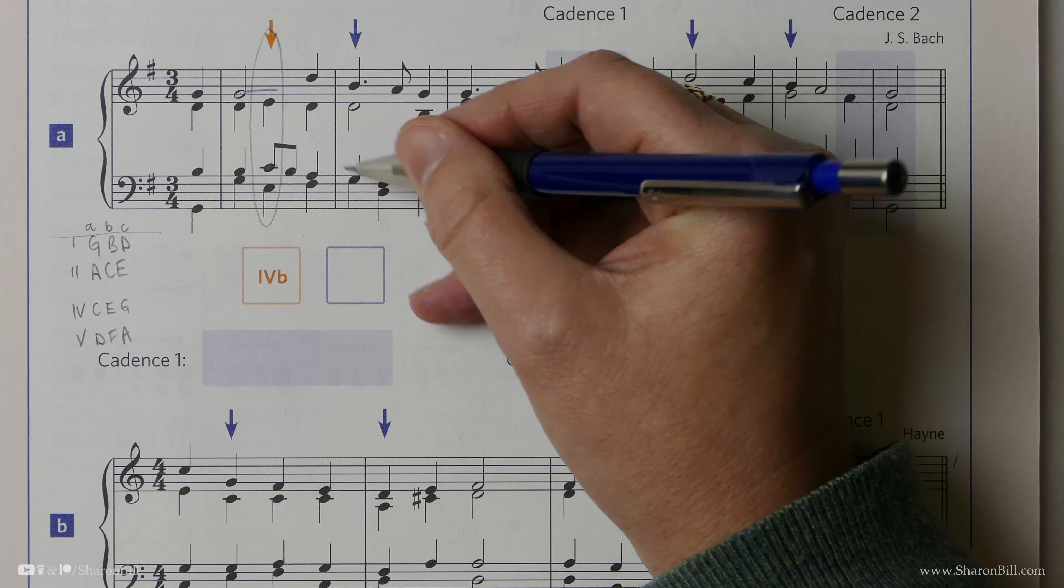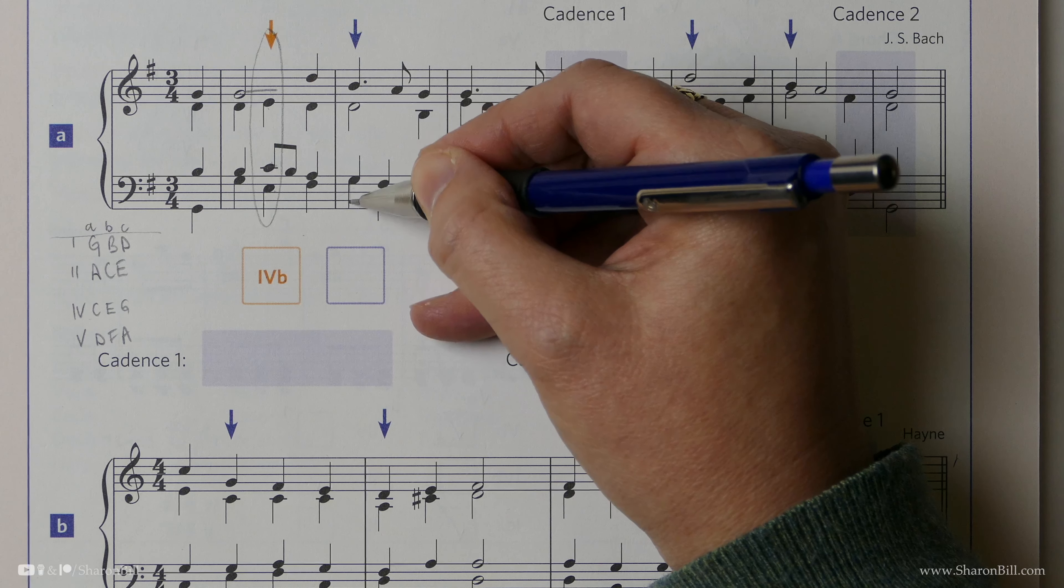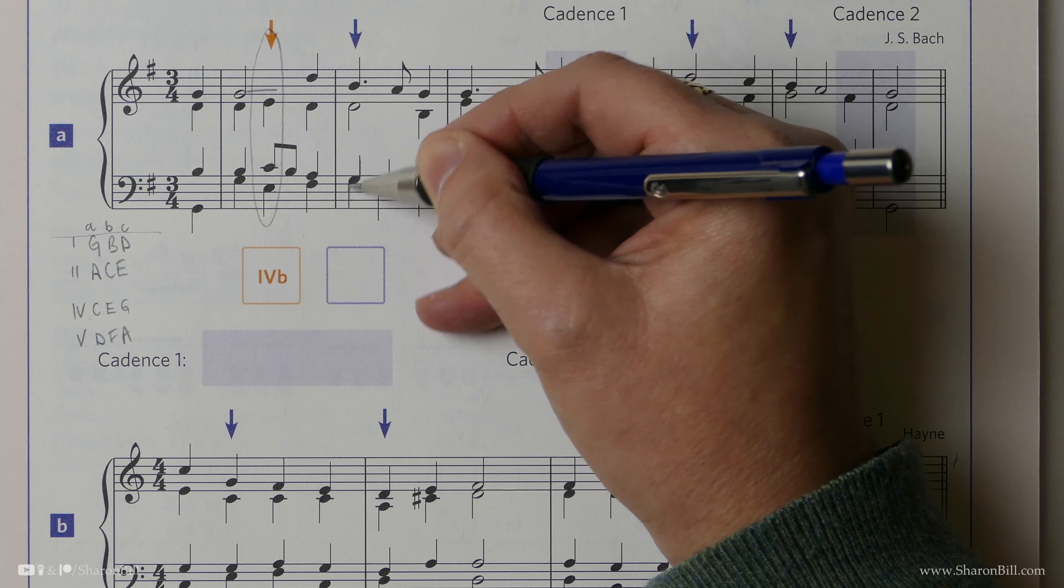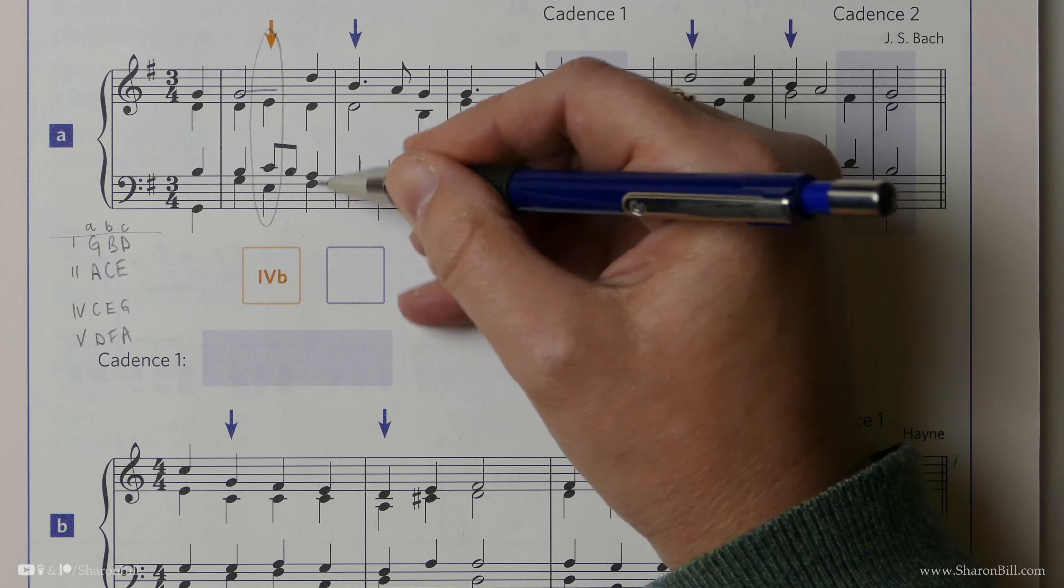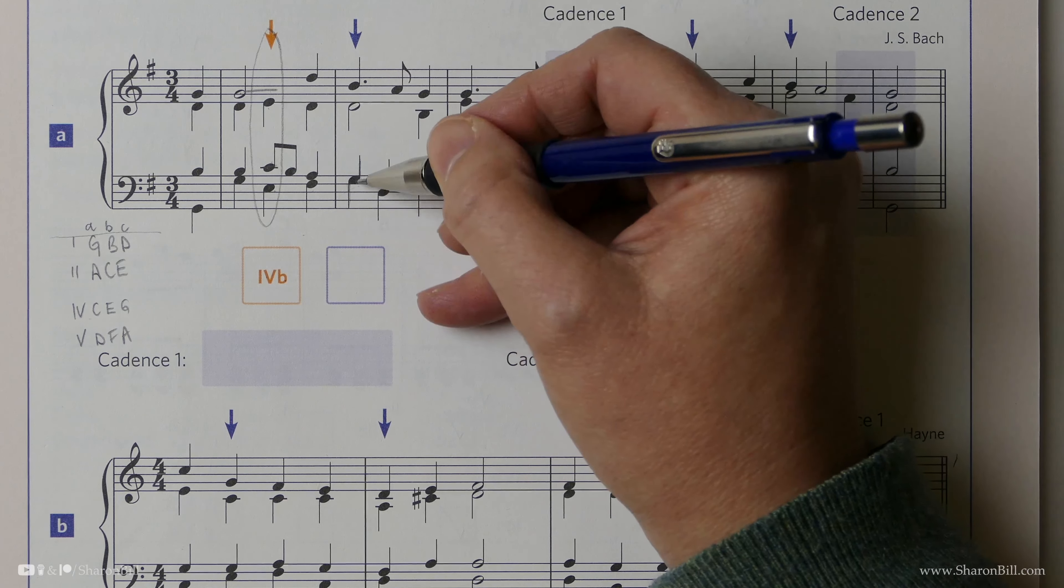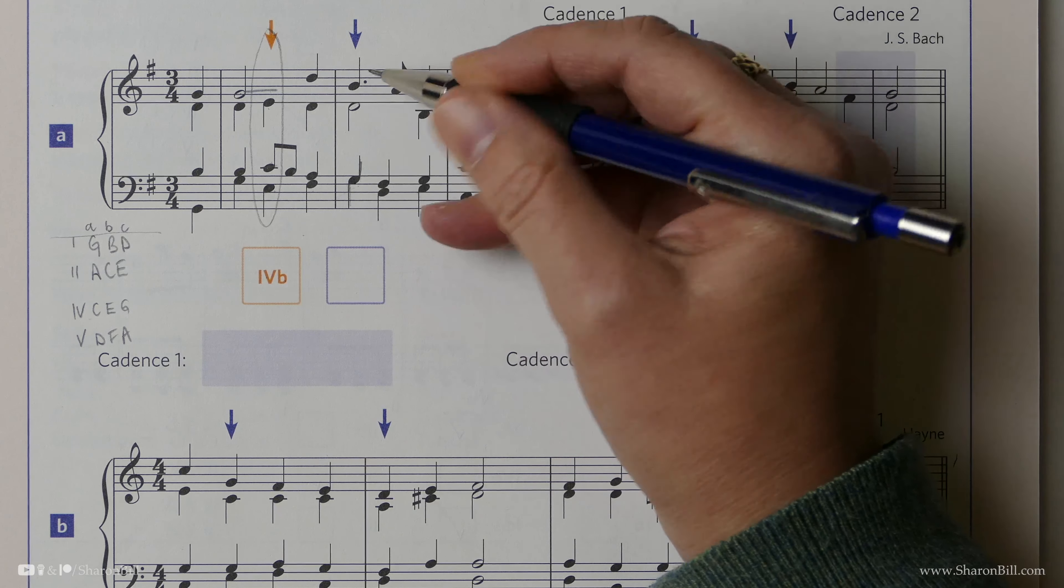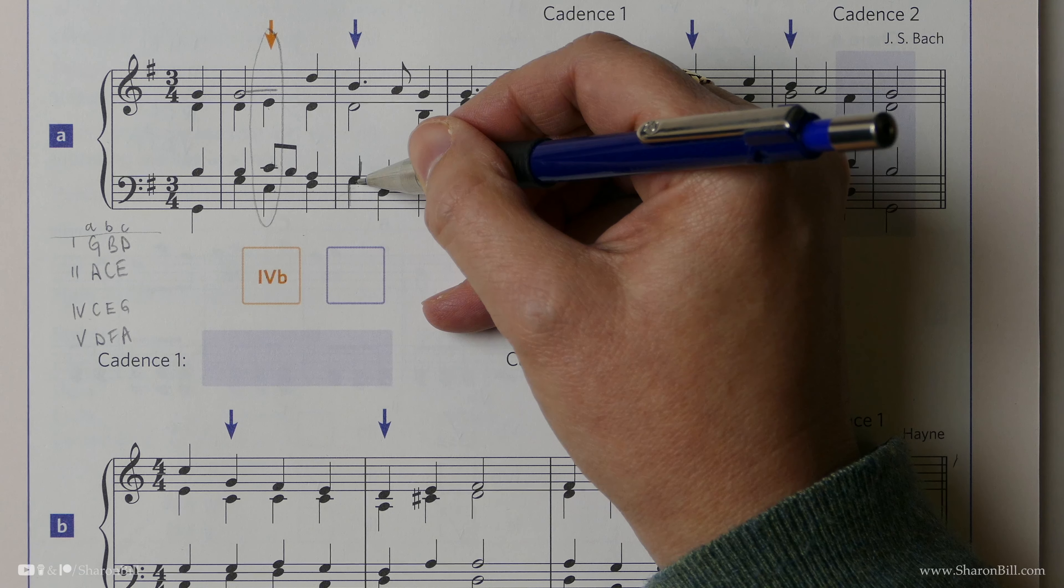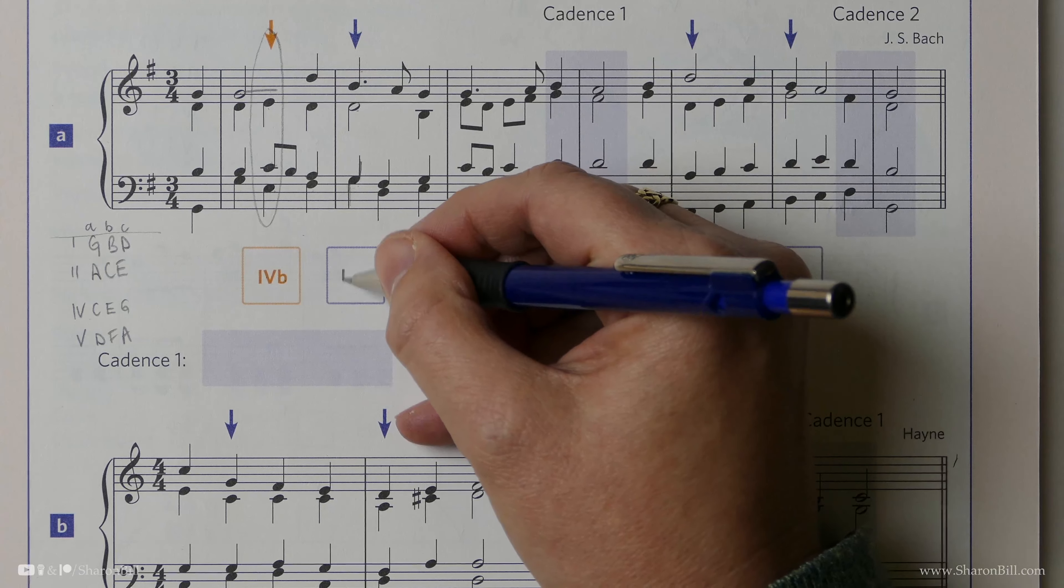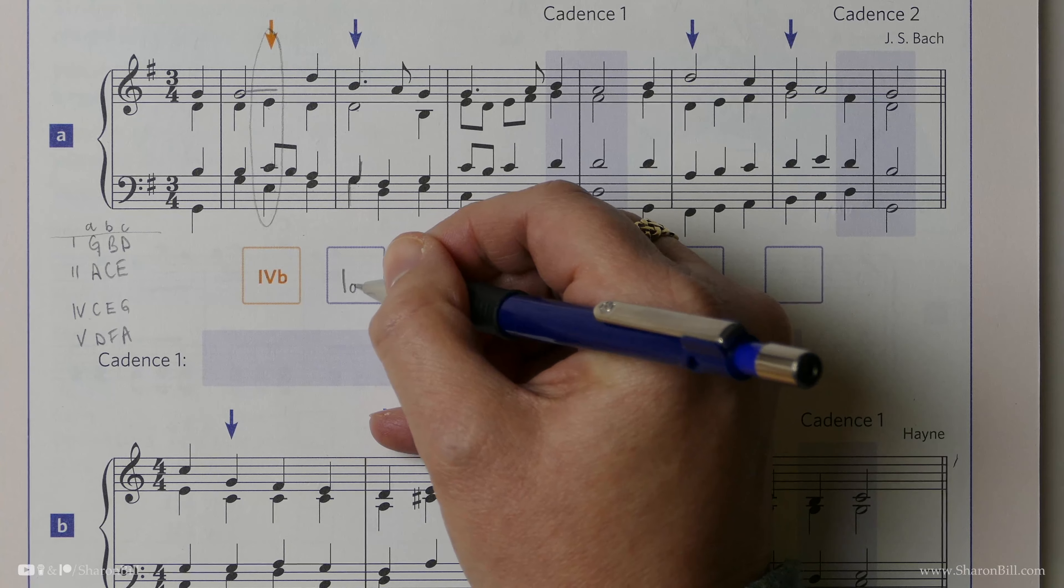And then here, the tenor line and the bass line have converged to share this note. So this one note is representing two voice parts, we would say. We call these voices, regardless of what instrument it was played upon. So we've got soprano, alto, tenor, bass. So here we have a G, a D, and a B. So that's a chord 1. And the G is in the bass, we're in root position, so it's a chord 1A.